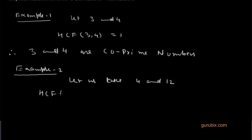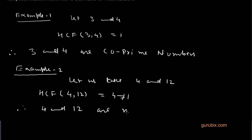We see that the HCF of 12 and four equals four, which is not equal to one. Therefore, four and 12 are not co-prime numbers.